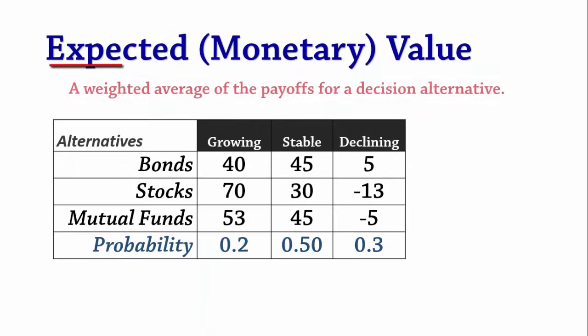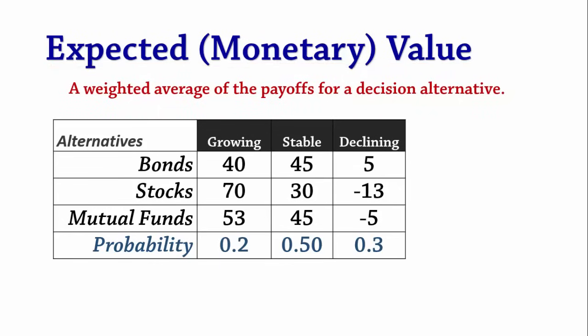The expected monetary value is a weighted average of the payoffs for a decision alternative. The weights are the probabilities of the different states of nature.